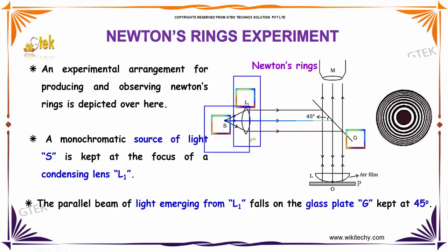The parallel beam of light emerging from L1 falls on the plate G at an angle of 45 degrees.